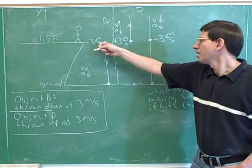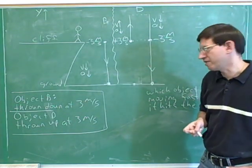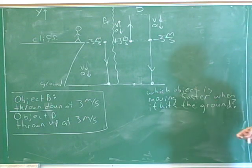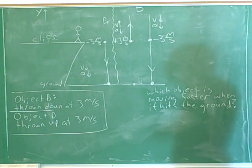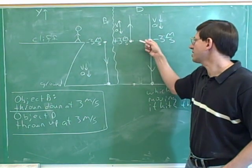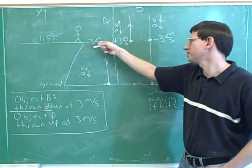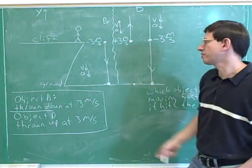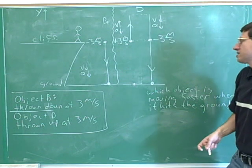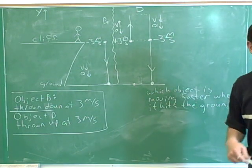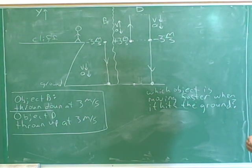Any two points that we choose on these downward paths, these two objects should have the same velocity. As a result, which object is going to be moving faster when they hit the ground? The answer is they're both going to be moving at the same speed. Since they both have the same speed at this height — a speed of three meters per second, with the same velocity of negative three meters per second — however much gravity speeds up one object before it hits the ground, that's the same amount gravity will speed up the other. So both object B and object D are going to hit the ground at the same speed.